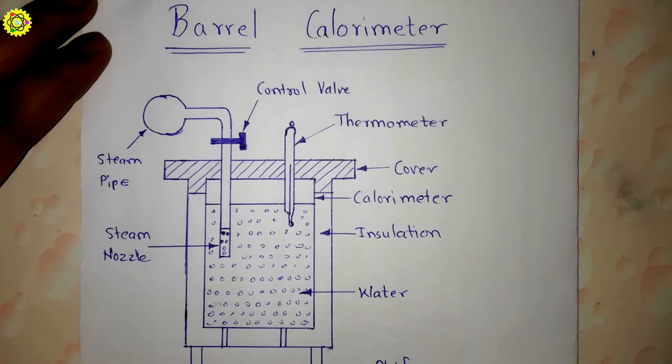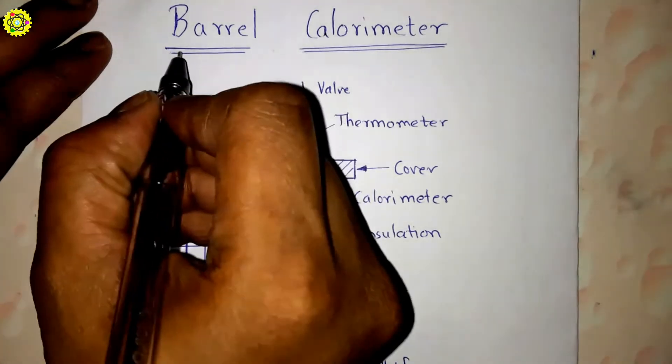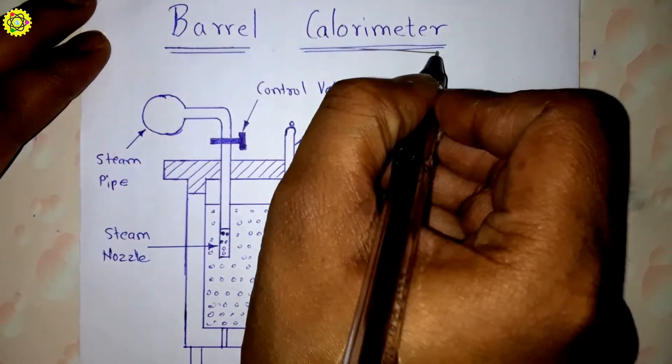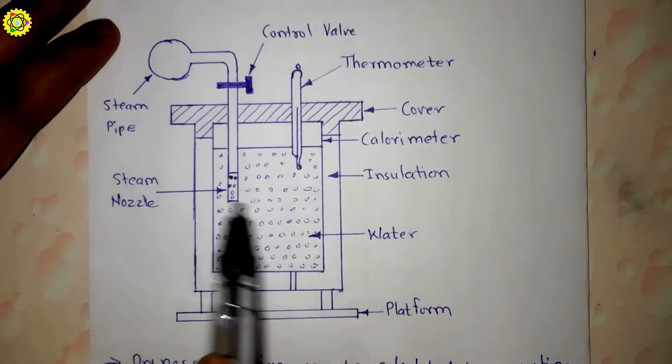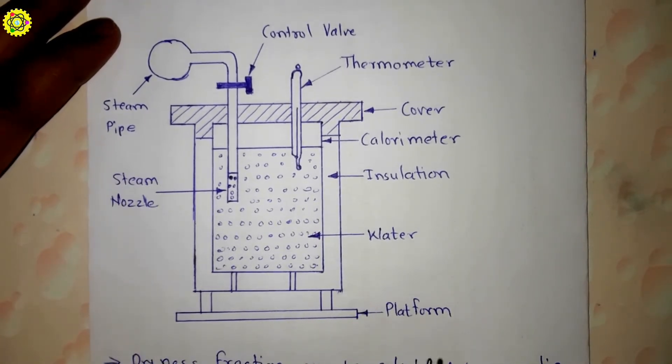Hi students, welcome. In this video we will understand about the barrel calorimeter. Here, calorimeter is used to determine the dryness fraction of the wet steam. Here this is the diagram of the barrel calorimeter as you can see here.